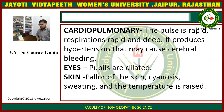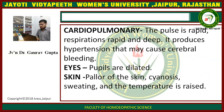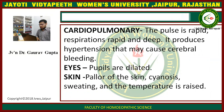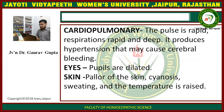In cardiopulmonary effects, the pulse is rapid. Respiration is rapid and deep. It produces hypertension that may cause cerebral bleeding. Pupils are dilated. Skin becomes pale and sweating is present, with a raised temperature.